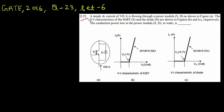So here is question number 23, this came in GATE 2016 set 6. A steady state DC current of 100 amps is flowing through a power module as shown in figure A. So this is a power module. It comprises of one switch and one diode. The V-I characteristics of the IGBT which is S and the diode D are shown in figures B and C. The conduction power loss in the power module is, so it is asking for what is the conduction loss when 100 amp current will flow in this direction.